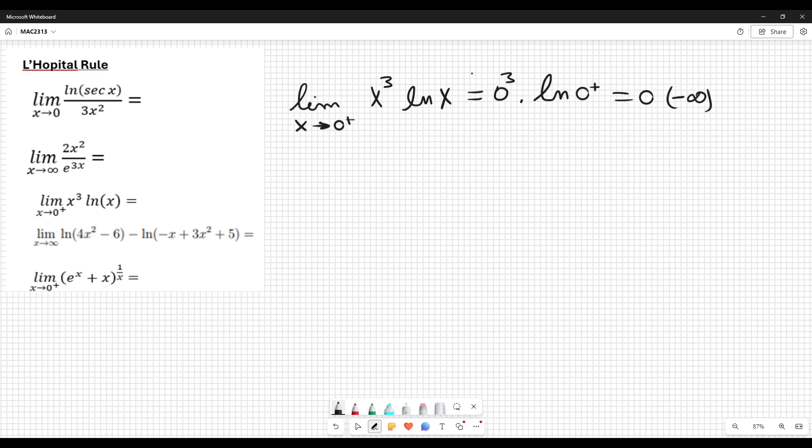The limit is equivalent to logarithm of x divided by x to the minus 3. And when you plug it in here, logarithm of 0 is minus infinity over, this is actually 1 over x cubed. You put in 0 here as infinity.